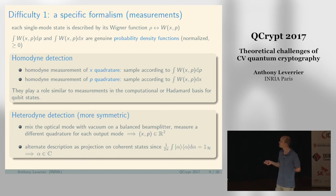This is one type of measurement you can do. There is a second type called heterodyne detection. It's not possible to measure both x and p at the same time.